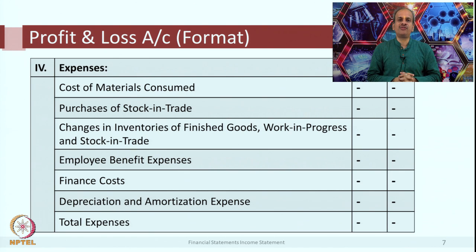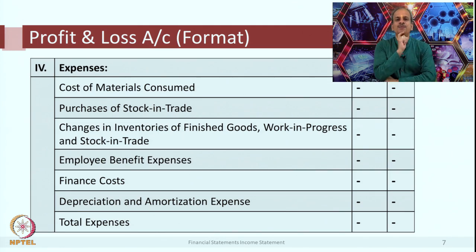Next is purchase of stock in trade. If you are a trading entity, you will buy goods and sell them as-is as finished goods — that is an example of stock in trade. Sometimes even manufacturing companies buy and sell finished goods. Whatever you have purchased as a ready item and sold as-is to the customer will be shown as purchases of stock in trade, while raw material consumed will be in item number 1.